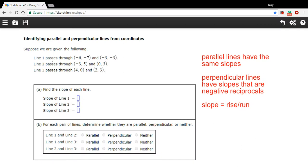In this problem, we are being given some points that are on three different lines, so pairs of points for each line. And then we're being asked to determine first the slope of each of those lines, and then whether they're parallel, perpendicular, or neither.